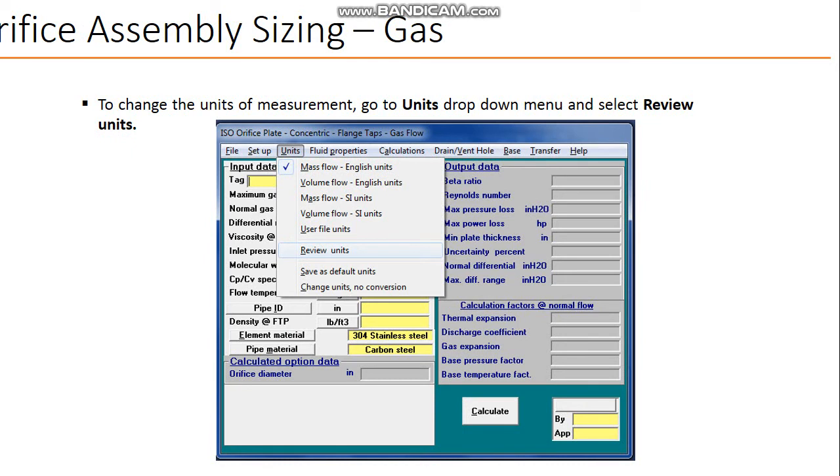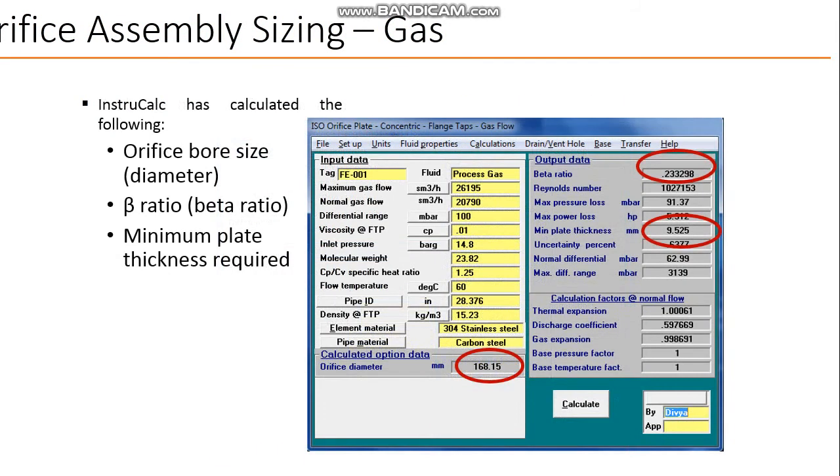First, before you do the sizing, you need to set the correct units. The units you can set in units. Here you can decide mass flow, volume flow, mass flow in SI unit, volume flow. First you have to set the units.